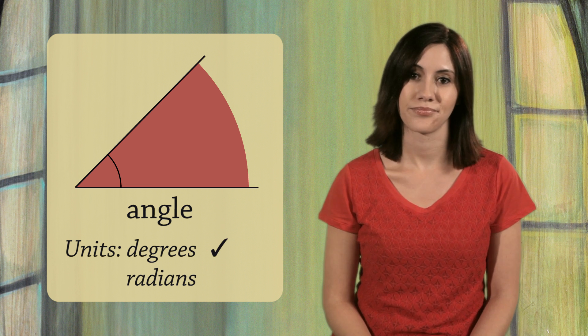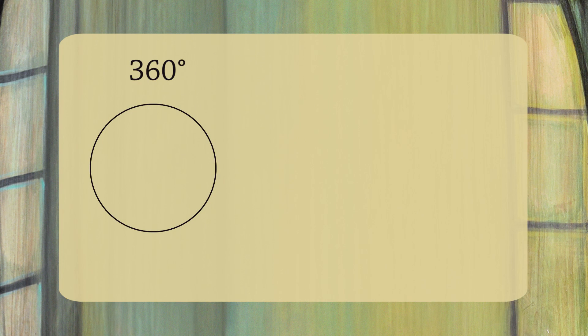We'll focus on degrees. There are 360 degrees in a circle. That little circle up above is the degree symbol. This means you have to rotate a line segment 360 degrees to make a complete revolution.